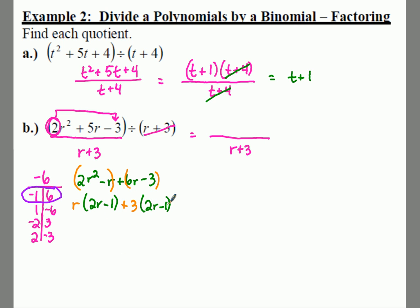So when you factor this, group everything together, you get an r plus 3 from your factors out front. And then you have a 2r minus 1 left over.